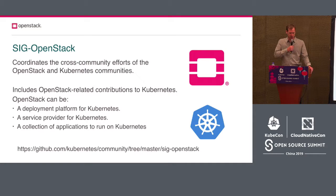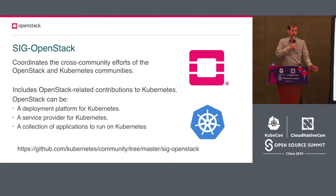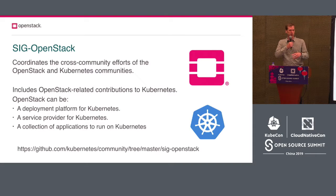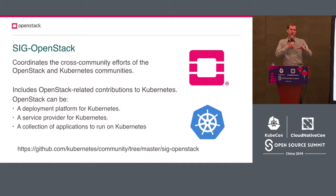This includes OpenStack-related contributions to Kubernetes. You can look at OpenStack in a number of different ways in relationship to Kubernetes. The first is you can treat it like a deployment platform — just as you would run Kubernetes on top of AWS, Azure, or Google Cloud, you can also run Kubernetes on top of OpenStack. Kubernetes really depends upon the existence of a cloud and underlying infrastructure through a series of common APIs.